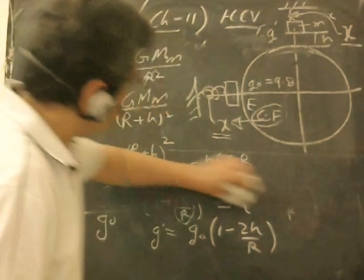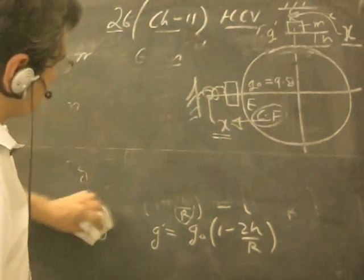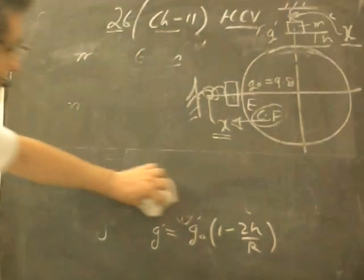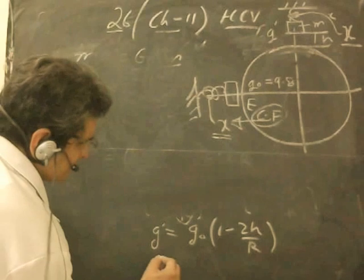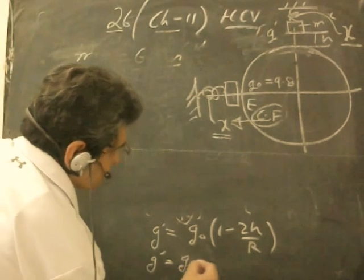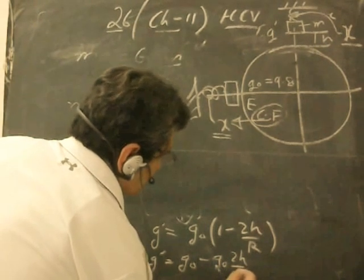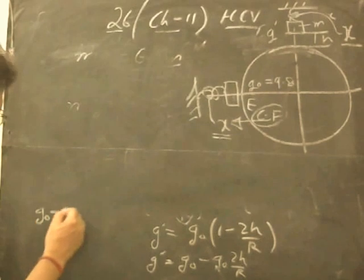So this is the relationship between the gravity at height h and gravity at the surface. It's a standard equation which should otherwise also be known for solving problems. Let us write it in a different form: g' = g₀ - g₀(2h/R).